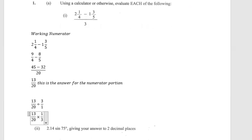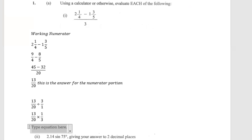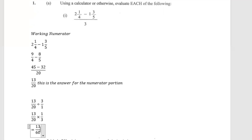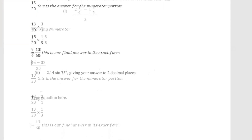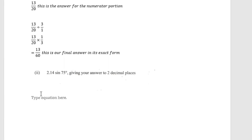Working that out: 13 multiplied by 1 gives us 13, and 20 multiplied by 3 gives us 60. So our final answer in its exact form is 13 over 60. Now moving on to Part 2.